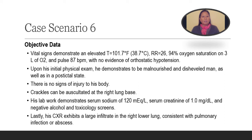The vital signs for this homeless man demonstrated an elevated temperature of 101.7, a respiratory rate of 26, 94% oxygen saturation on three liters of O2, and a heart rate of 87. He had no evidence of orthostatic hypertension. Upon his initial physical exam, he demonstrates to be malnourished and disheveled, as well as in a postictal state. There were no signs of injury to his body. Crackles can be auscultated at the right lung base. His lab work demonstrates a serum sodium of 120, a serum creatinine of 1.0, and a negative alcohol and toxicology screen. His chest x-ray exhibits a large infiltrate in his right lower lung consistent with pulmonary infection or abscess.